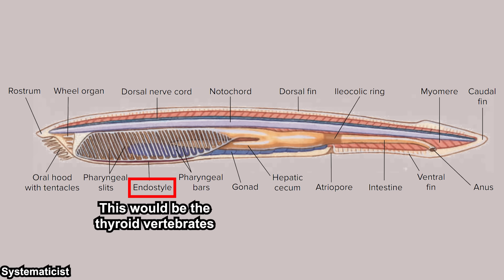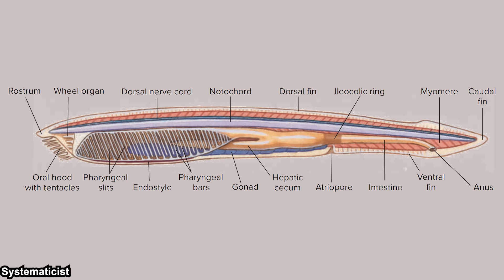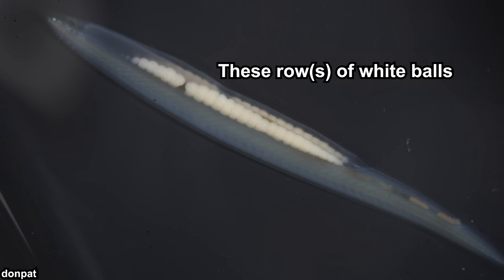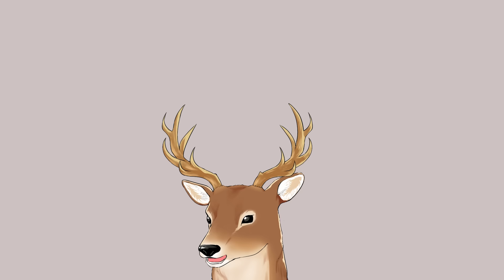This is their dorsal nerve cord, and this is their endostyle, which helps in digestion. These traits are the characteristics of chordates. And if you see images of lancelets and notice a light pattern along the ventrolateral side of their body, those are their gonads. Branchiostoma has gonads on both sides, while Asymmetron and Epigonichthys only have them on the right side — you can see these quite easily most of the time.